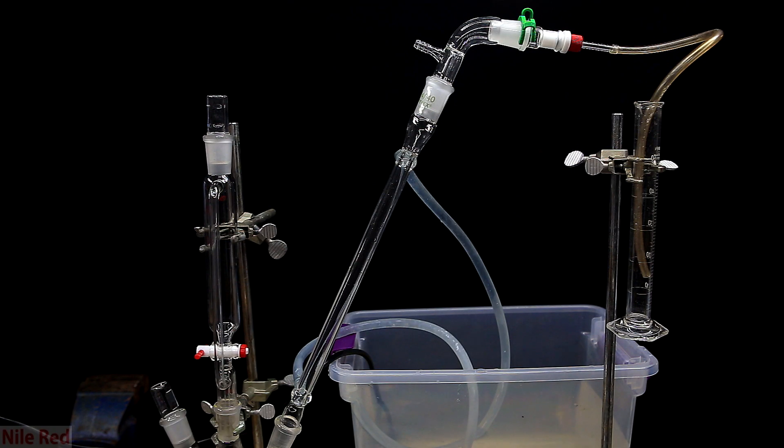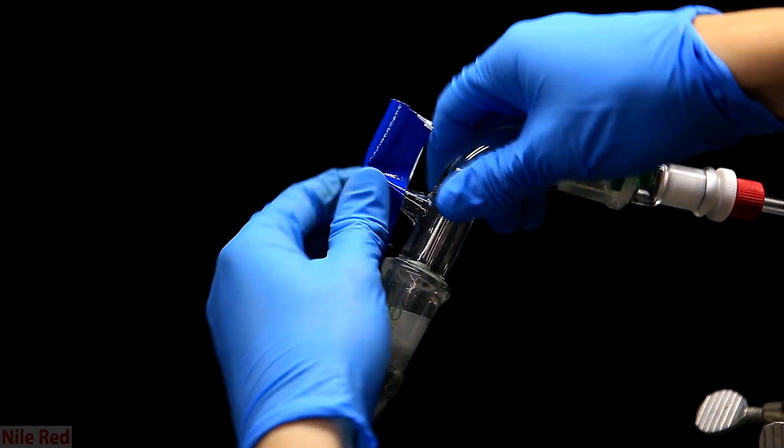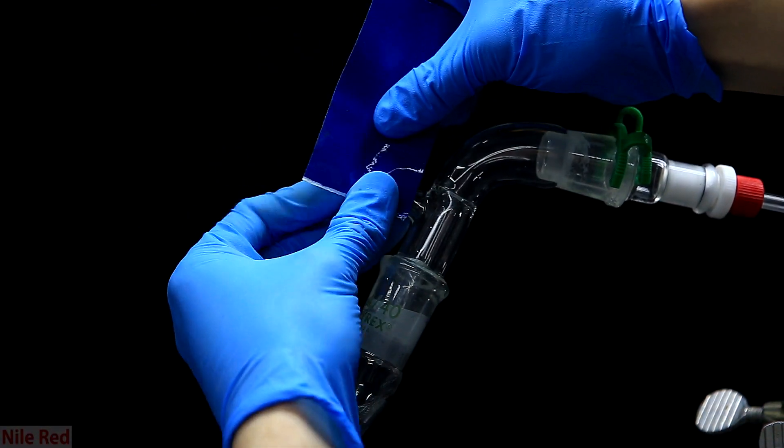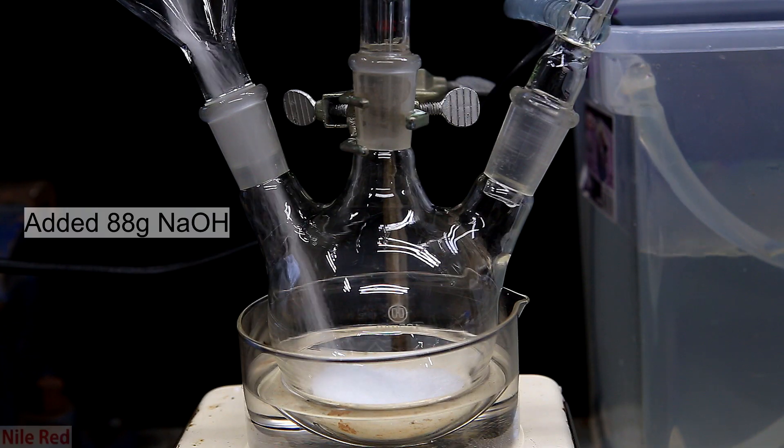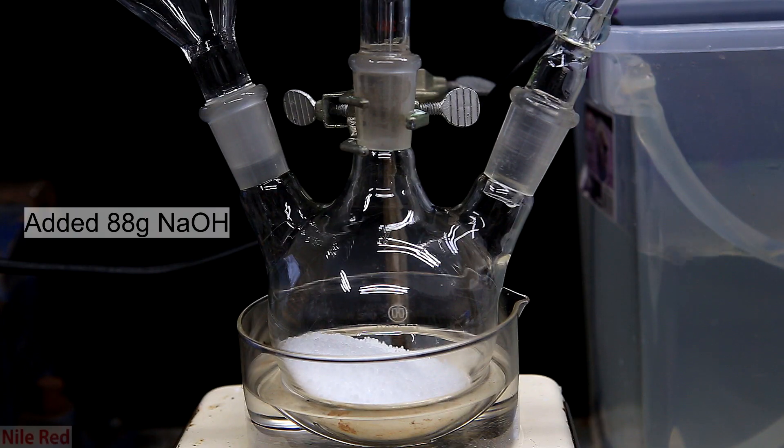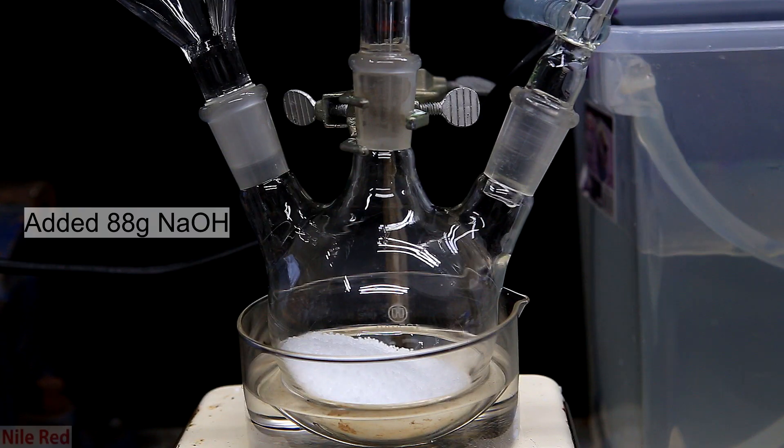It should also be noted that all of the joints are sealed with a little bit of grease to make sure that the ammonia doesn't leak out into the lab space. The vacuum adapter is open, and I use a very sophisticated technique using tape to block it. So to our reaction flask, I first add 88 grams of sodium hydroxide. This is in excess of about 10% to account for the about 10% water content in commercial sodium hydroxide.